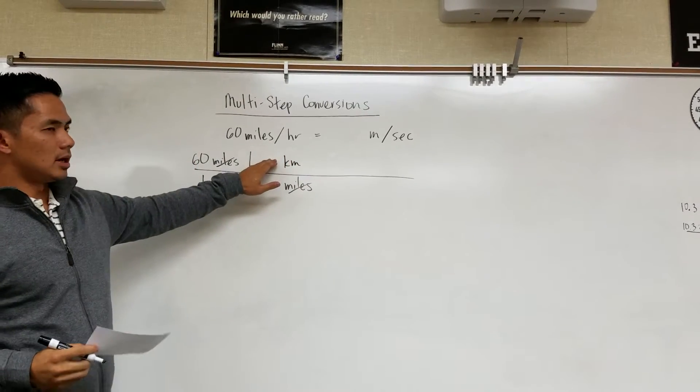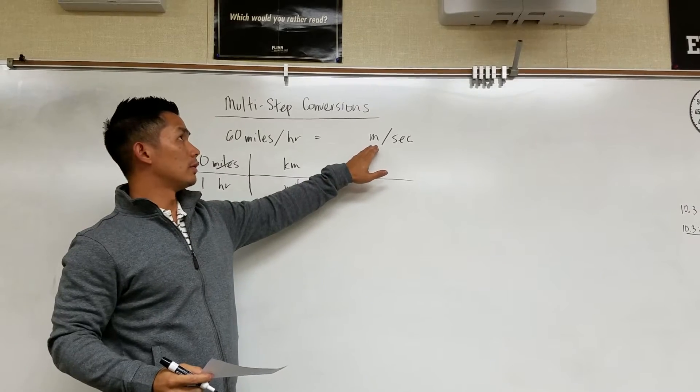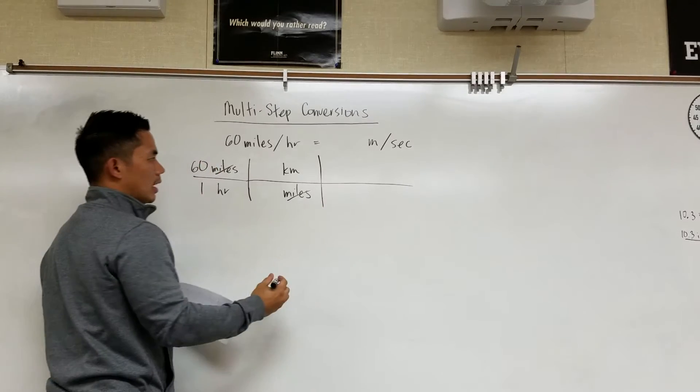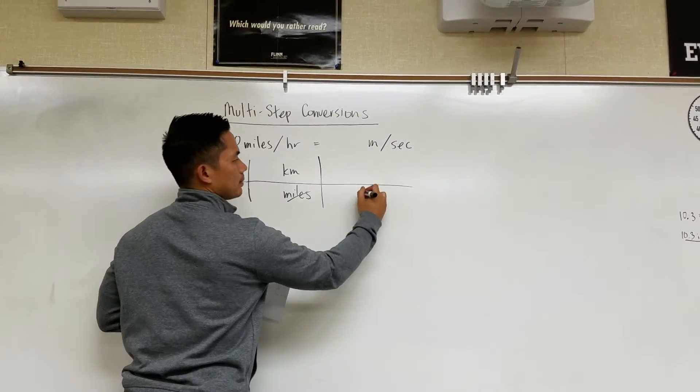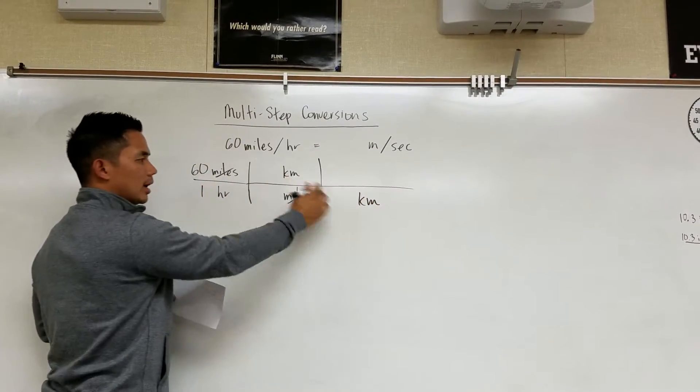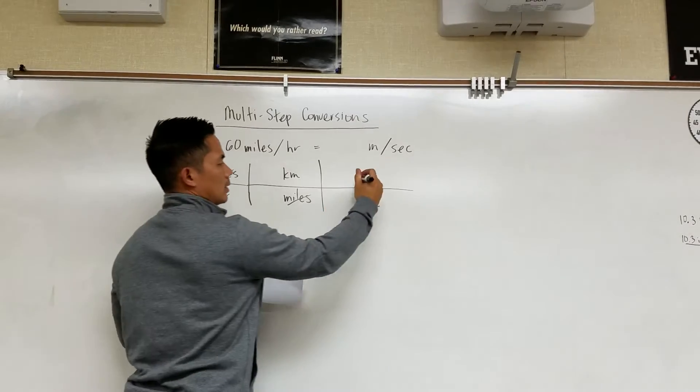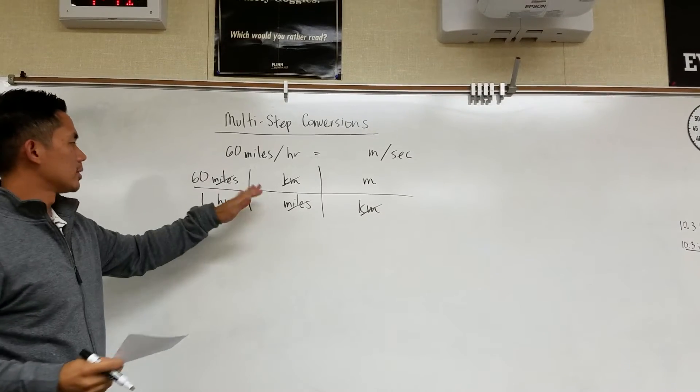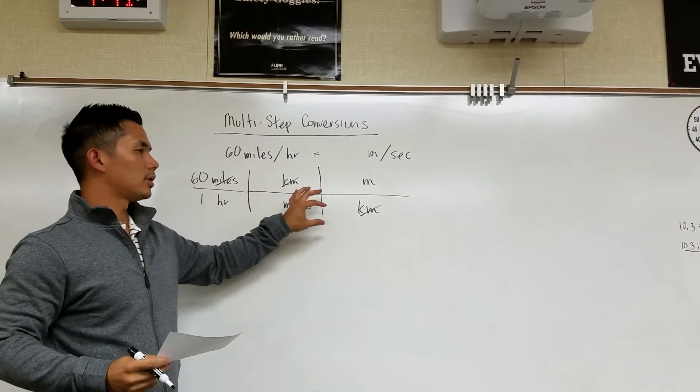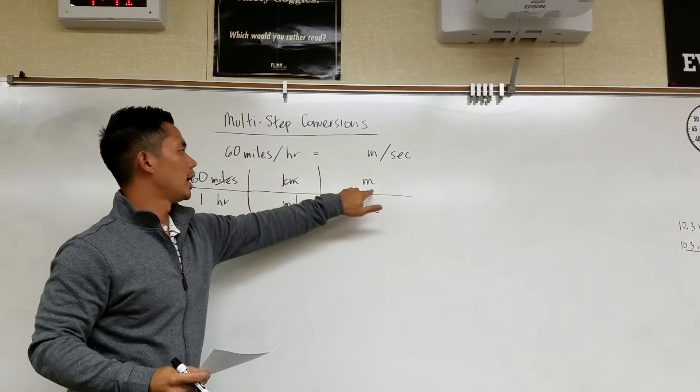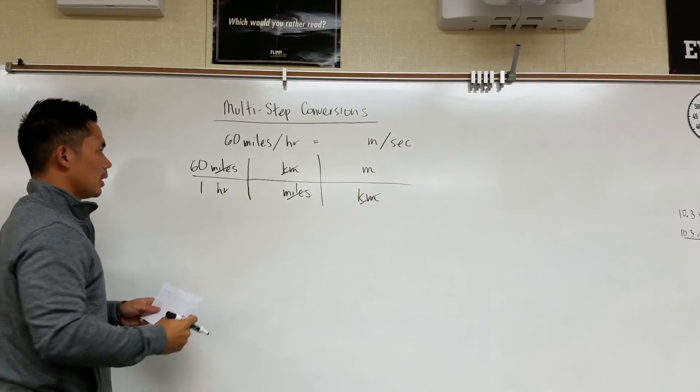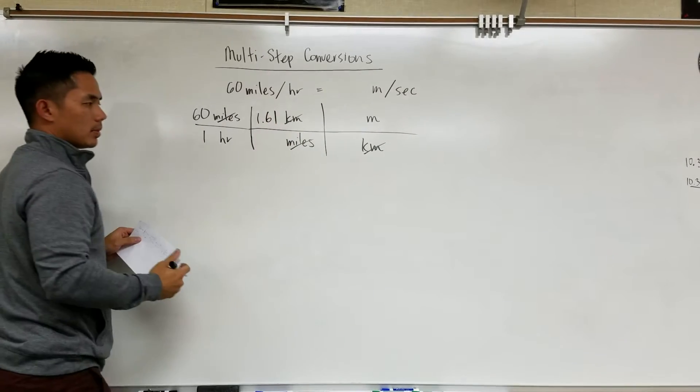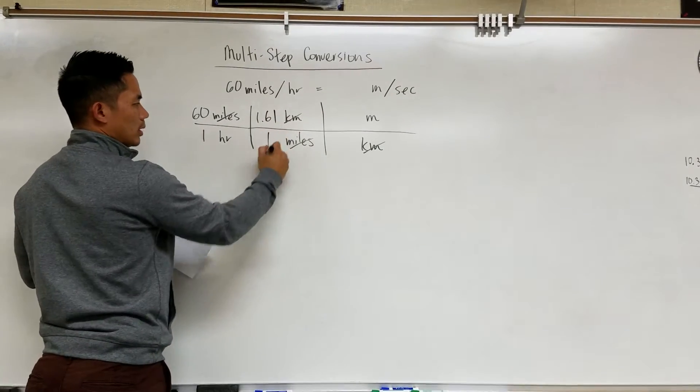But this is not the unit that we want to finish with. We want to finish with meters. So now I'm going to take it one more step and write km on the bottom and write meters on top. Now here I will cancel out all of the length that I don't want and I'm left with meters. Now I know that there are 1.61 kilometers for every 1 mile.